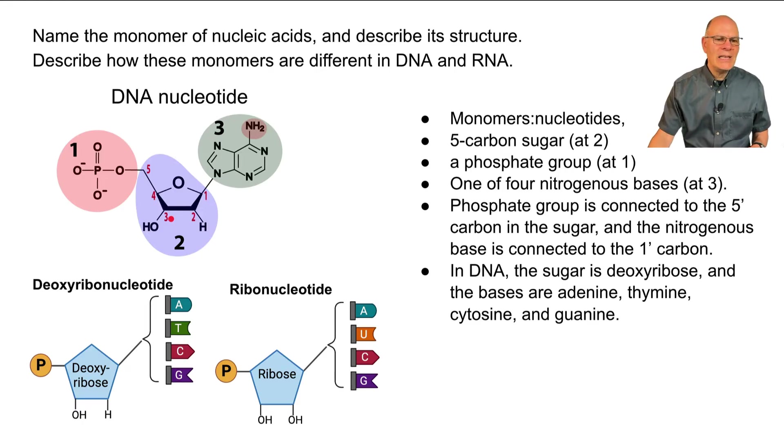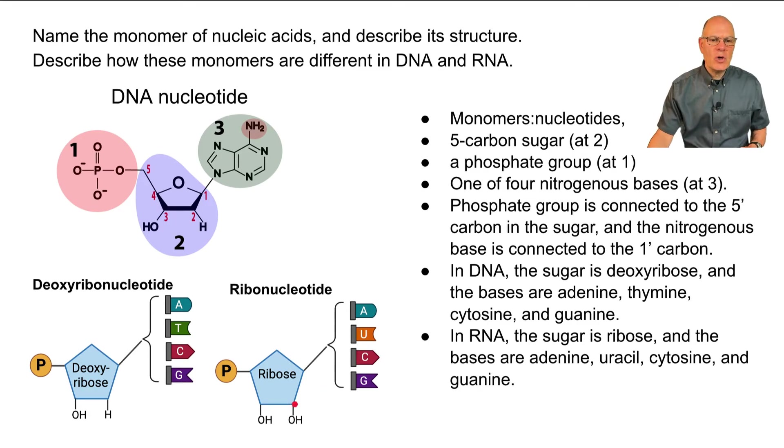In DNA, the sugar is deoxyribose. And there are four bases: adenine, thymine, cytosine, and guanine. In RNA, the sugar is ribose. And the bases are adenine, uracil, cytosine, and guanine.